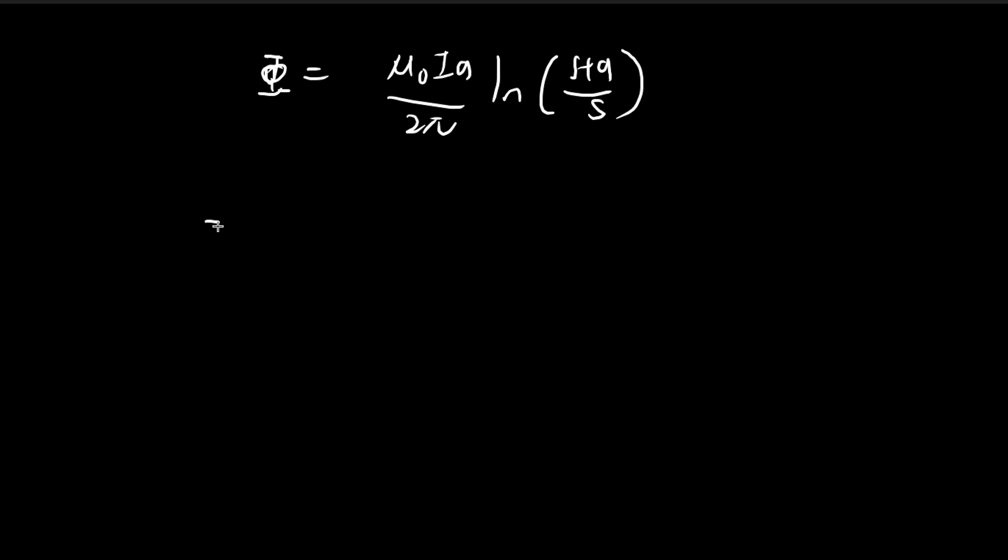And so in the end, we know that the flux is going to be given by μ₀Ia divided by 2π natural log (s+a)/s. So now we want to find the change in flux, the negative of the change in flux. And this is going to be the EMF. So directly substituting everything in. So everything else is just a constant. So all these are constants. So it's not affected by the derivative. The only thing that's changing is I. So we have a dI/dt over here.